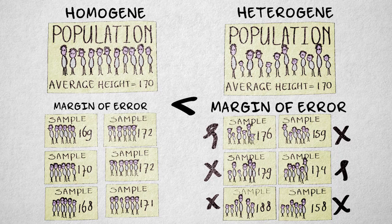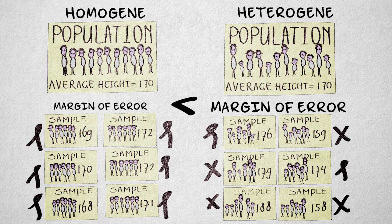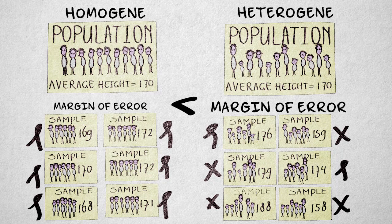If the population is more homogeneous or similar, meaning it takes on a narrow, limited set of values, well then the sample value will automatically lie closer to the population value.